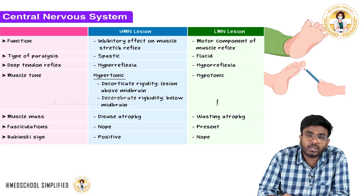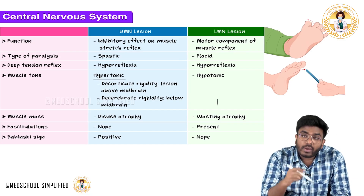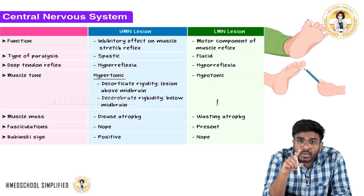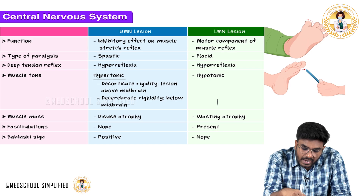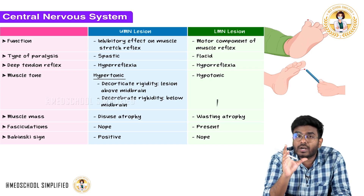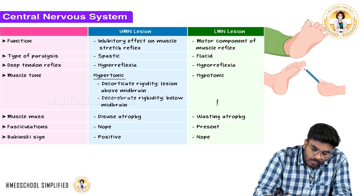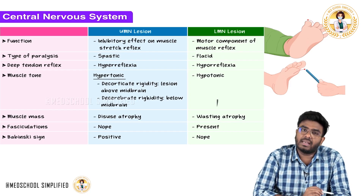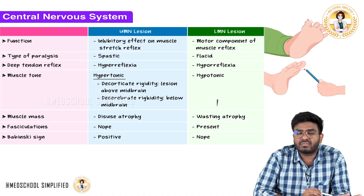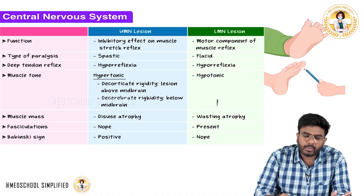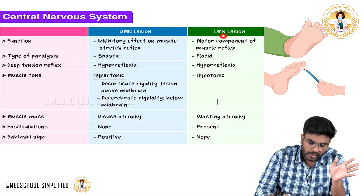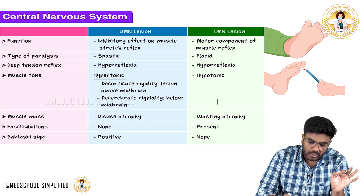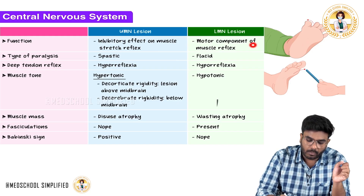The alpha motor neurons go to the muscle and cause contraction. We will discuss muscle stretch reflex and inverse stretch reflex later. But simply put, the function of lower motor neurons is to cause muscle contraction — that is why they are called the motor component.